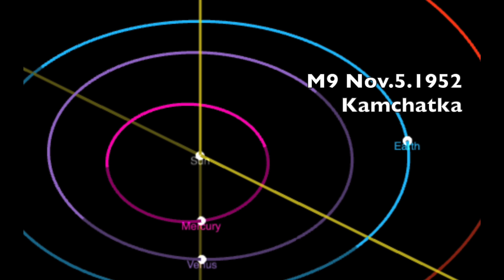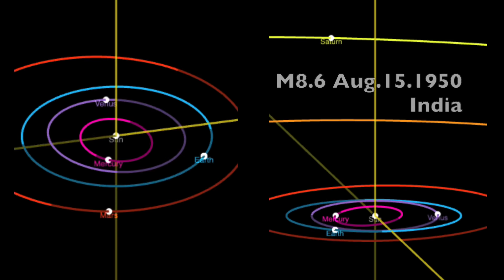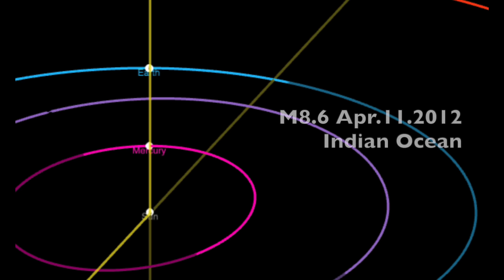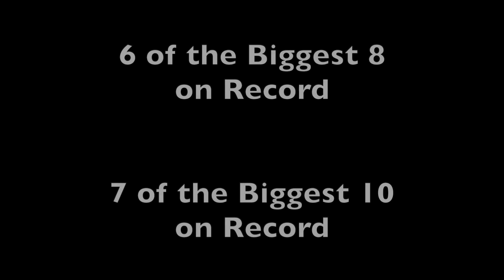Had another one in 1952 for the Great Kamchatka quake. There were two sets of alignments during the largest quake on record in India, including that Venus-Mars-Mercury inclusion. Another one for the 2012 shake in the Indian Ocean, and by the way, that was six of the largest eight earthquakes ever recorded. Seven of the largest ten.